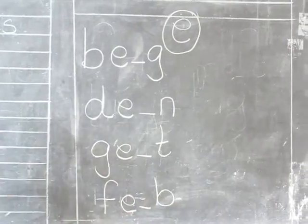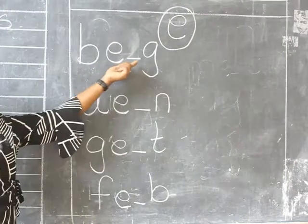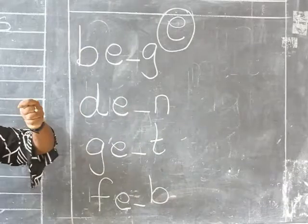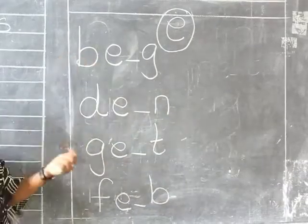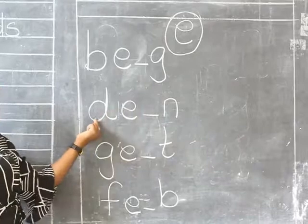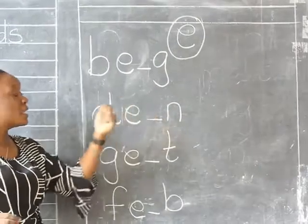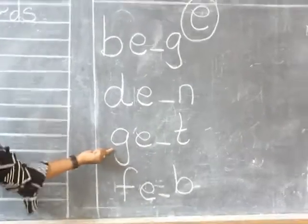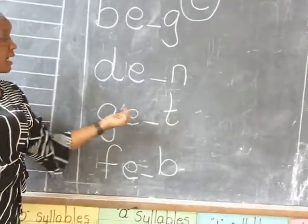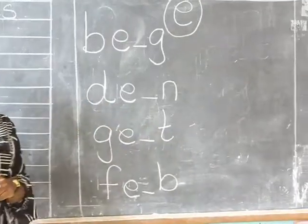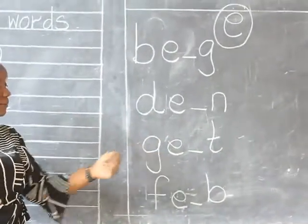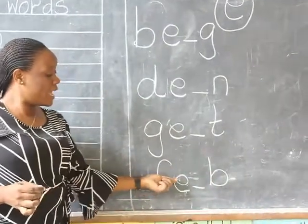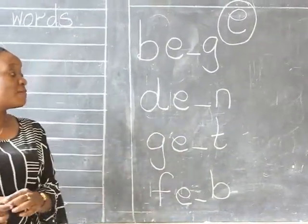Let's read the words again. Bu e, gu — the word is bag. Bu e, n — the word is ban. Bu e, tu — the word is bat. F, e, bu — the word is fab.